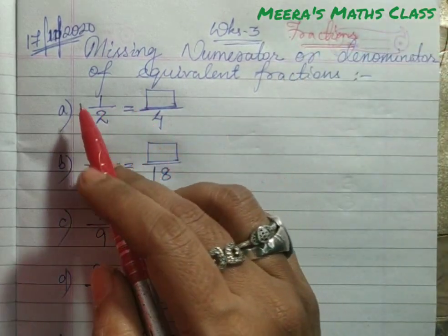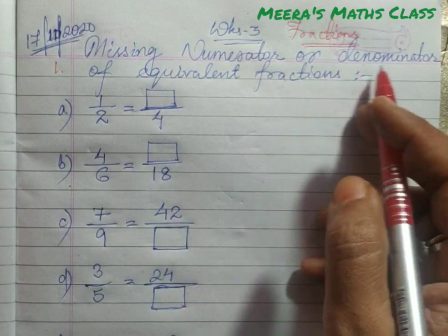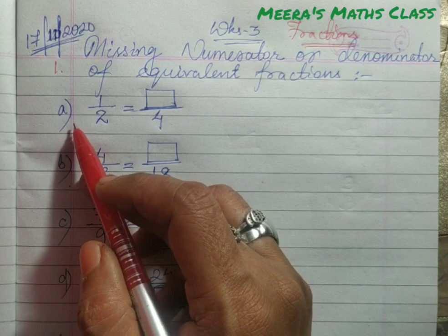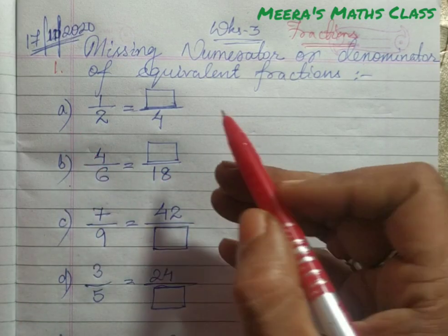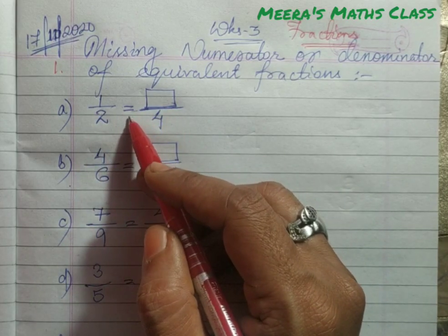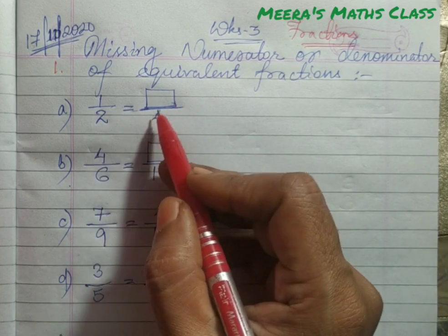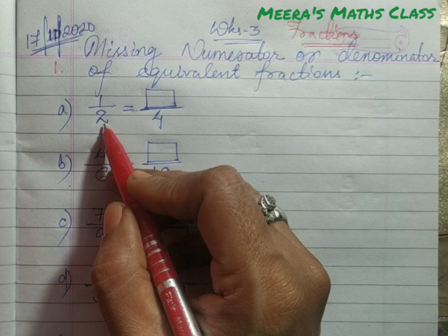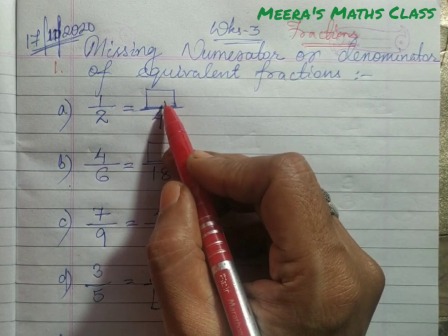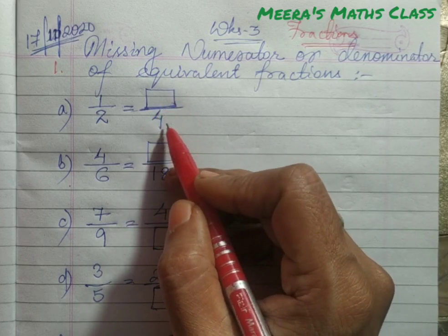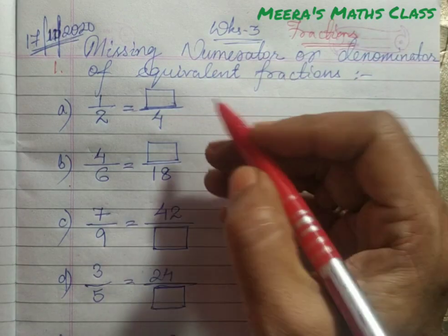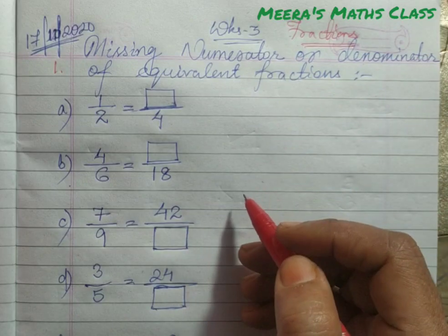The first one is: missing numerator or denominator of equivalent fractions. In the first one, we are going to find out the missing numerator. These are equivalent fractions because equal to is there, and we have to find out which one is missing. 1 by 2 is equal to — we don't know what is the numerator, and the denominator is already given as 4. Now I will teach you how to find out the missing numerator in this example.